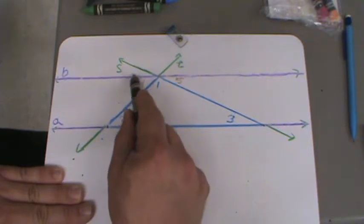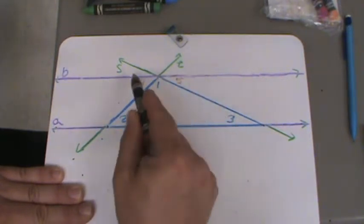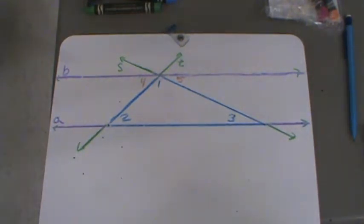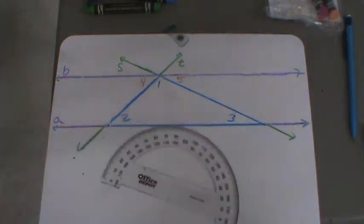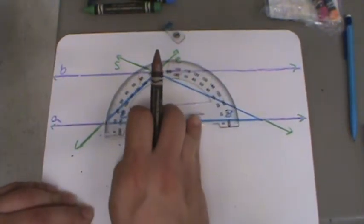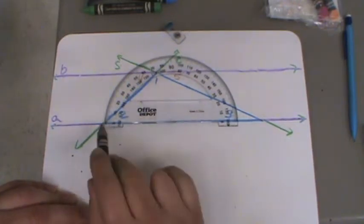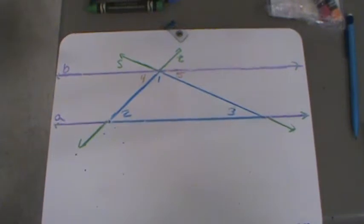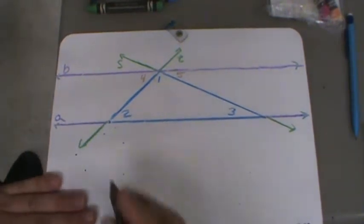We also know that when you have a straight line, there are 180 degrees in a straight line. Every straight line has that 180 degrees. Prove it. Here's our degree measure here. Put it down. You'll see the straight line. Zero, 180. We have every straight line has 180 degrees.